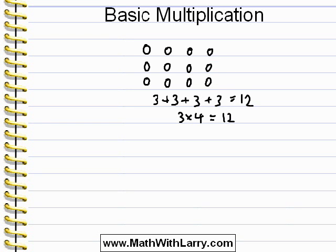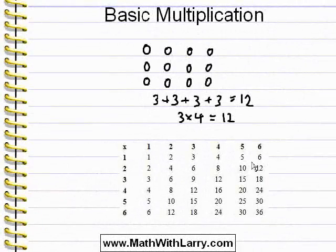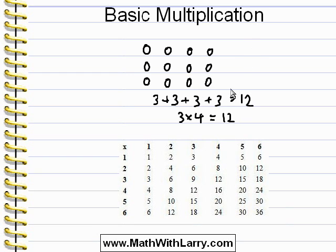Let's now take a look at a multiplication table. What this table does is it just shows us multiplication facts, so that we don't have to actually write out symbols or actually do the arithmetic — that's already been done for us. If I want to multiply three times four, I just look for three down the left-hand column, and then look for four along the top, and then I look to see where that row and that column meet. And I can see that the answer is twelve.